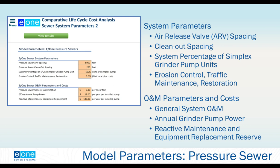Andrew: For the calculator, it appears that the minimum number of sewer laterals usable is 50. Is there a reason that minimum limit is set at that number? Keith: We kind of looked at what we would expect to see — we want something that mirrors realistic scenarios.